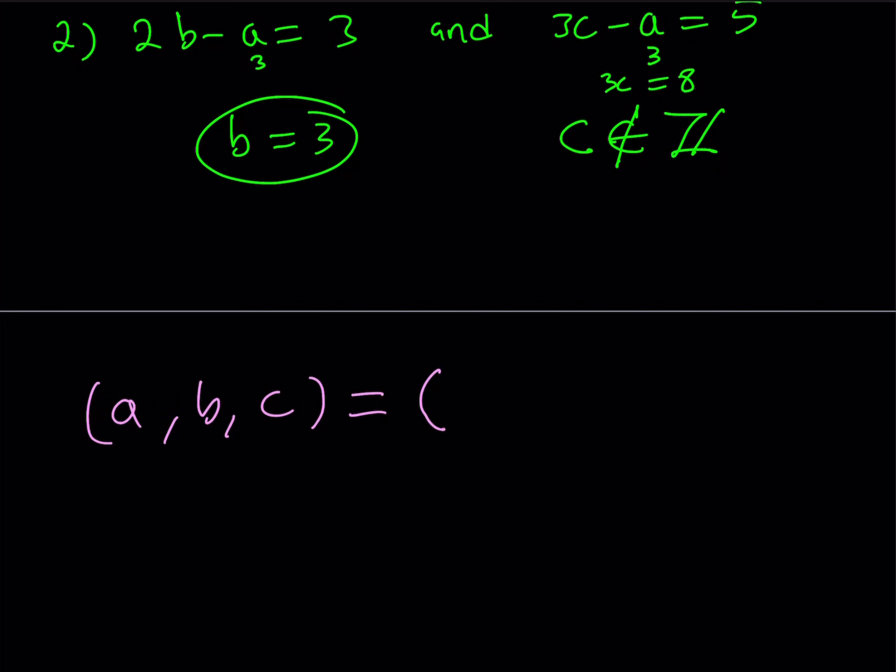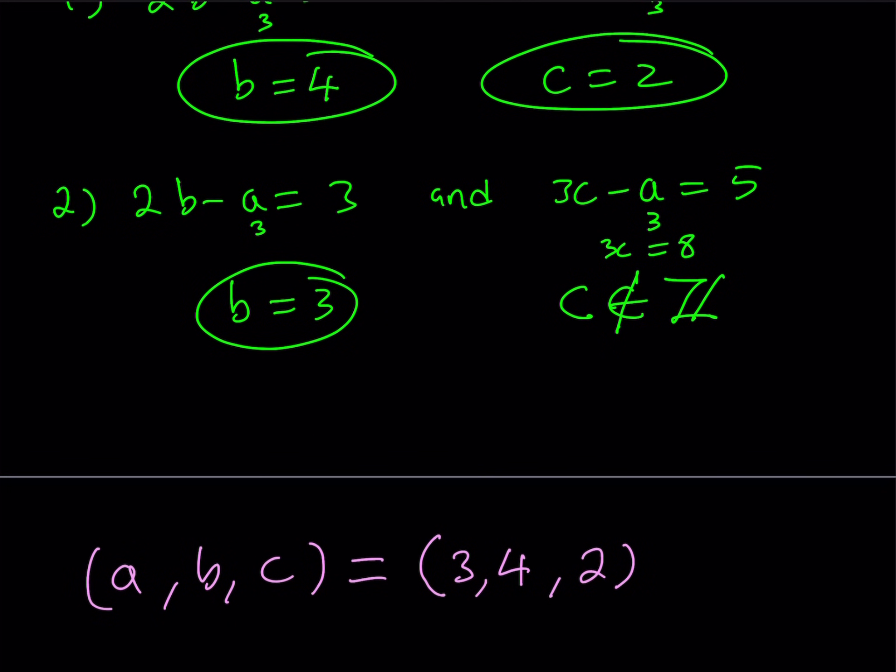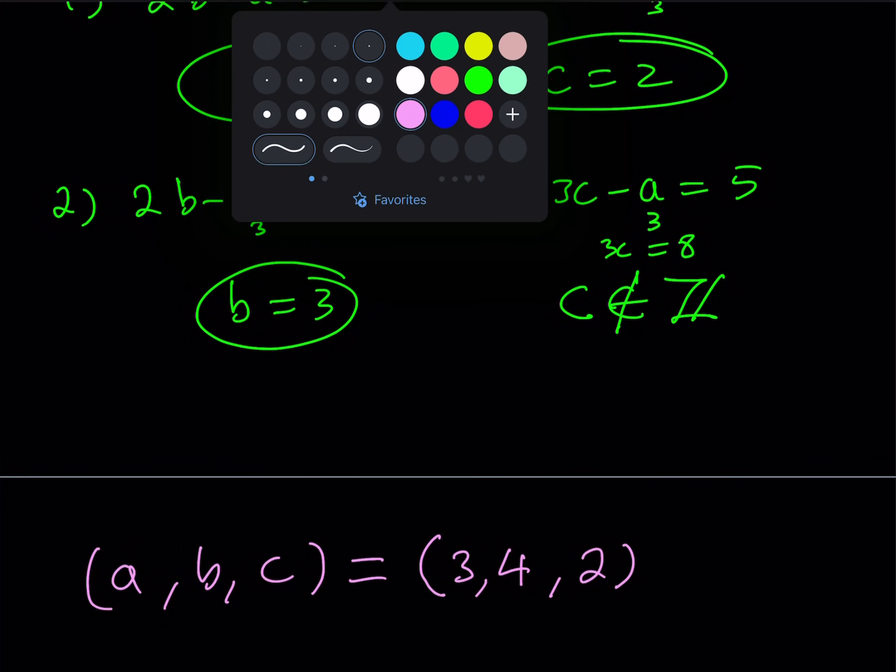So as a conclusion, I can safely say that a, b, c can be written as 3, 4, 2. And this brings us to the end of this video.